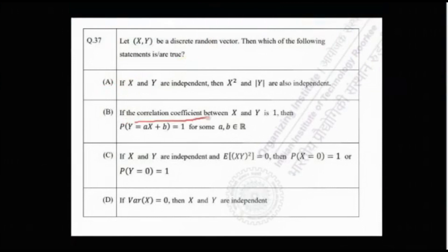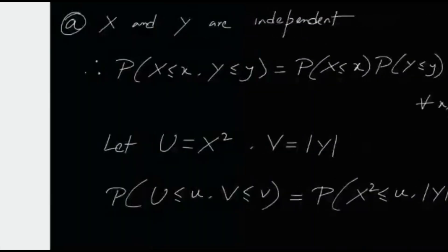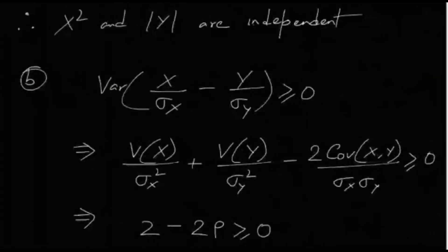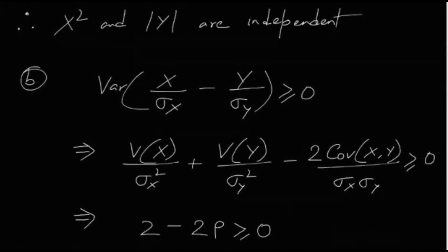Option B says: if the correlation coefficient between X and Y is 1, then P(Y = aX + b) = 1 for some real numbers a and b. This is true from the definition — if the correlation between two random variables is ±1, they lie on a line. Let's prove it.